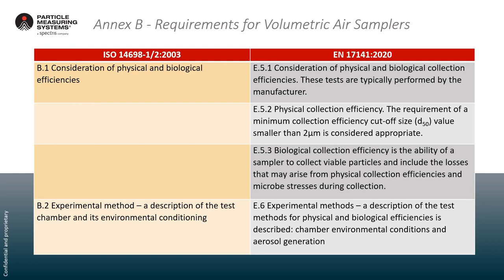One important point is the physical collection efficiency requirement in E5-2: a minimum D50 — that is, 50 percent efficiency at sizes smaller than two microns — is considered appropriate. ISO 14698 used to talk about collection efficiency down to one micron but gave no criteria as to what that value needed to be — it could be 1 percent or 100 percent efficient at one micron. Now with EN 17141, there is a clear criterion: 50 percent efficient at collecting particles smaller than two microns.